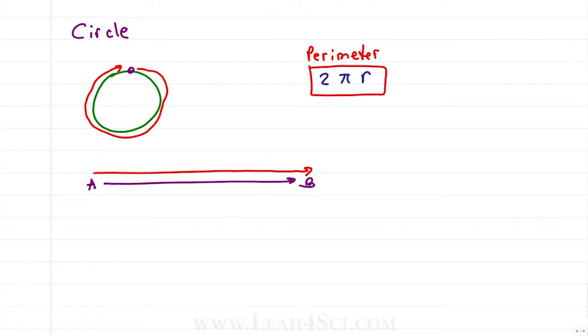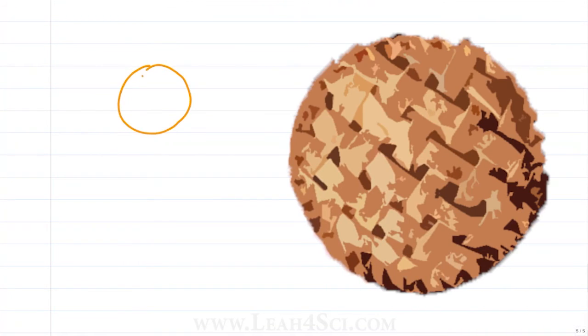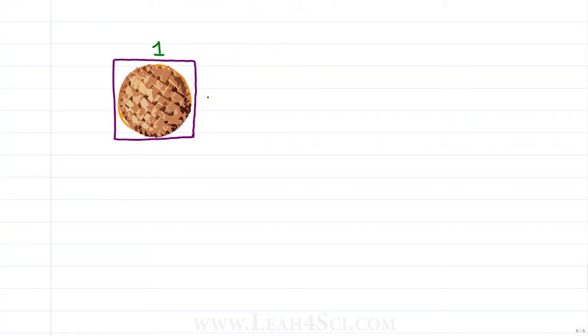Instead, you have to memorize the equation 2πr. If this looks scary, here's a trick. Imagine you just purchased a pie — I love apple — and it came in a square box. If we try to measure the perimeter of the square, assuming each side has a unit of 1, then the square is side 1, side 2, side 3, side 4 — they're all 1. Which is 1 plus 1 plus 1 plus 1, that equals 4.